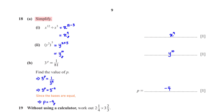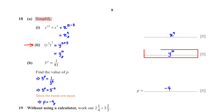Simplify y squared, all raised to the power 5. In this case, the powers of y multiply: y raised to the power 2 times 5, which equals y raised to the power 10.